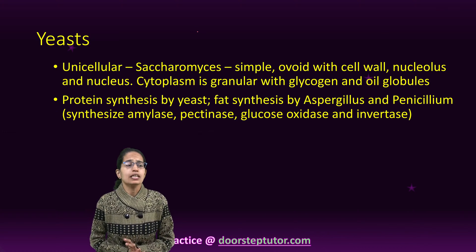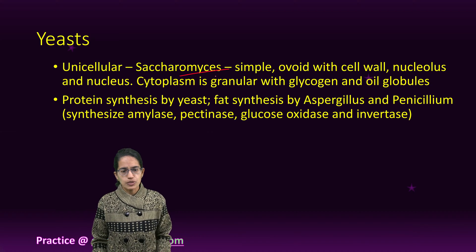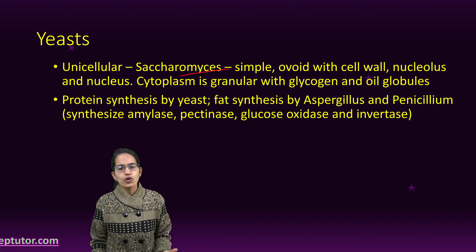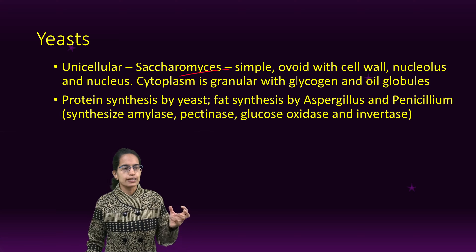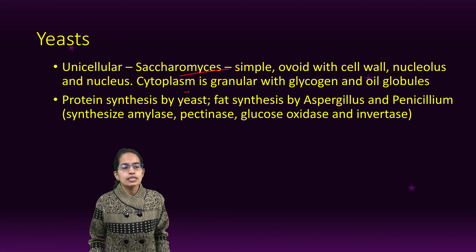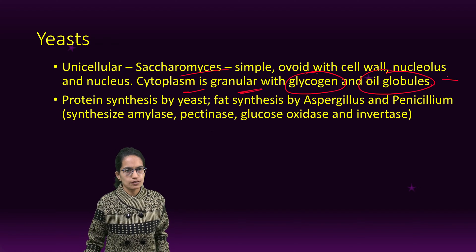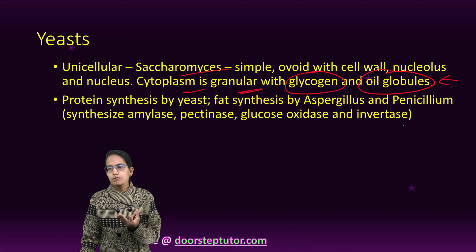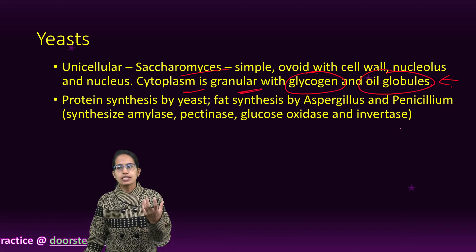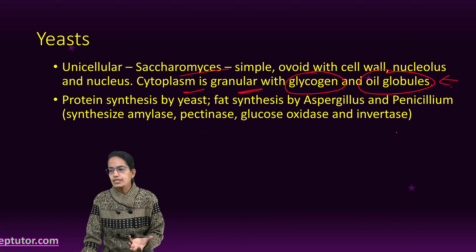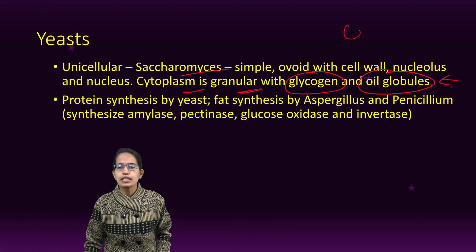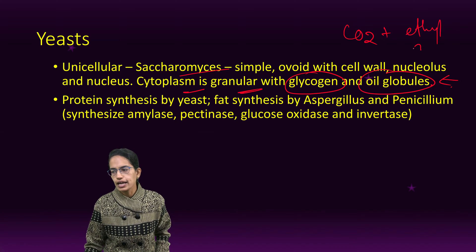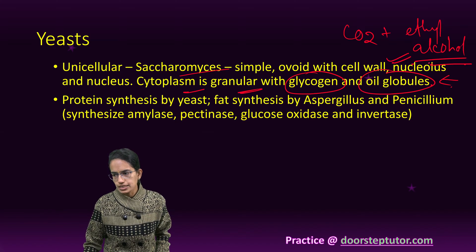The next is yeast. Yeast are unicellular — Saccharomyces is a good example. The shape of Saccharomyces is simple ovoid. It has a cell wall of chitin, nucleus and nucleolus. The cytoplasm is granular and has glycogen and oil droplets. Sometimes they respire anaerobically — in the absence of oxygen — producing carbon dioxide and ethyl alcohol. This process is known as fermentation.